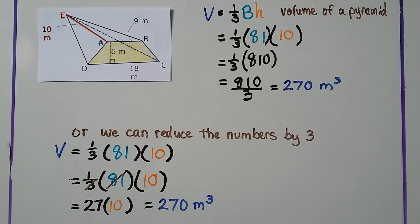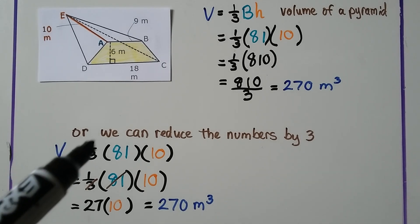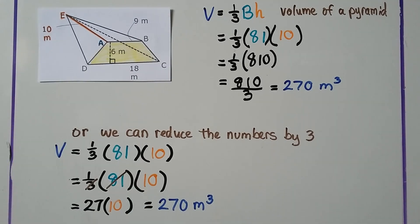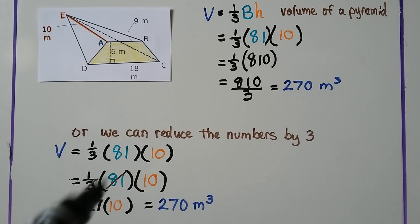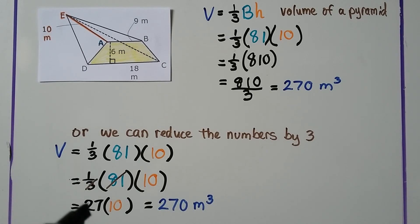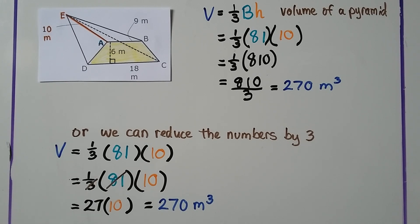Another way to solve it: when we had one-third times 81 times 10, we could have cancelled out the 3 and the 81 by reducing by 3, giving us 27 times 10, because 81 divided by 3 is 27. That still gives us 270 meters cubed — a quicker way to do the math.